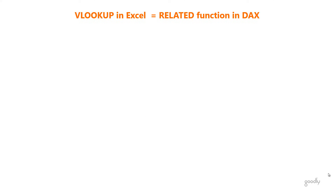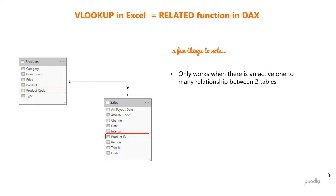The RELATED function is equivalent to writing a VLOOKUP in Excel. A few things to note: the RELATED function only works when there is an active relationship between two tables, and the relationship should be a one-to-many relationship. We have a products table where the product code is linked to the product ID in the sales table.